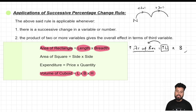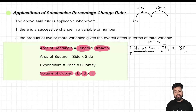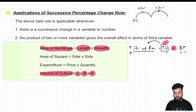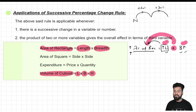If I increase the length, the area will increase. Likewise, if I increase the breadth, what will be the effect on the area of the rectangle? If you increase the breadth, the area of the rectangle will also increase. So whenever 2 or more variables are connected by a multiplication sign and both have a direct effect on the third variable — in all such situations I can apply the concept of Successive Percentage Change.